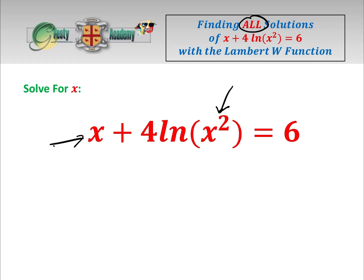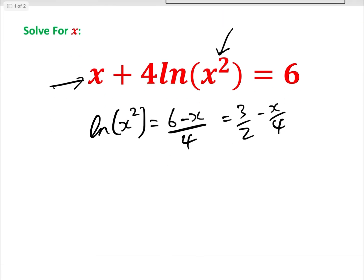Let's take 6 minus x. We can get here log x squared equals 6 minus x over 4, which equals 3 over 2 minus x over 4. And therefore, raising to the e...